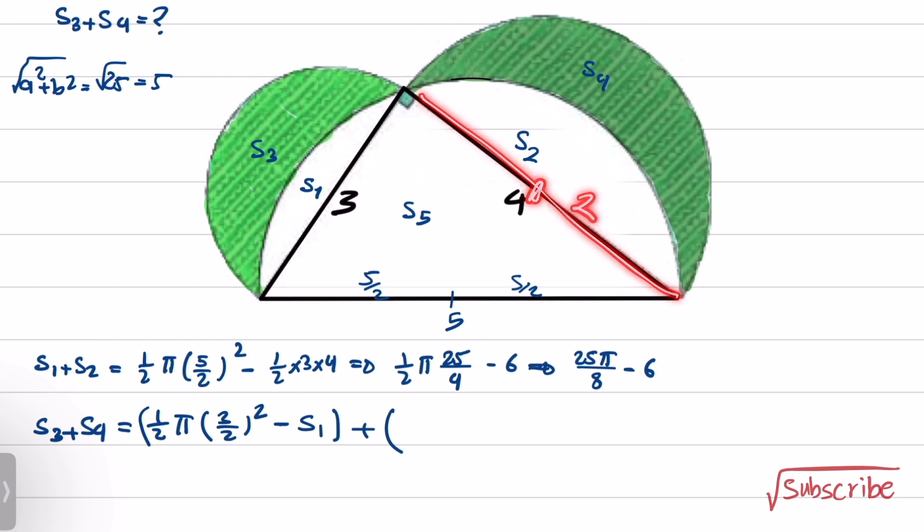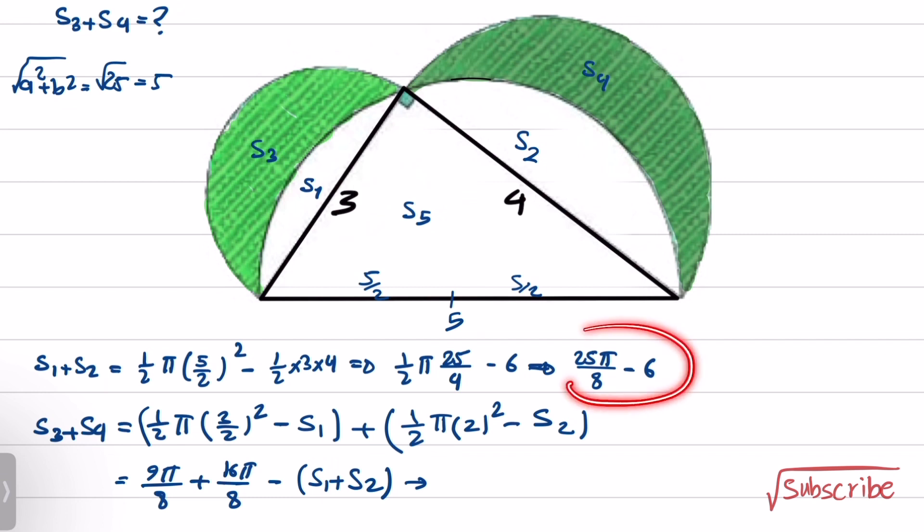This is radius 2. It will be 1/2 π times 2² minus S2. We can simplify this: it will be 9π/8 plus 16π/8, which is 25π/8, minus S1 plus S2.